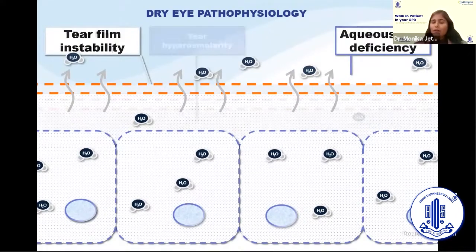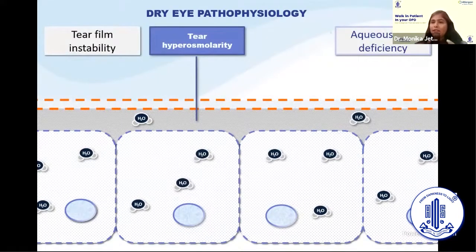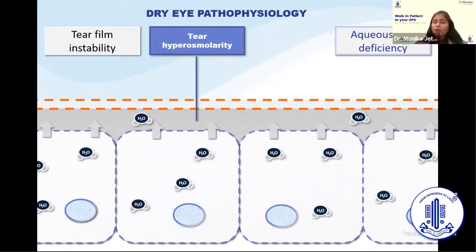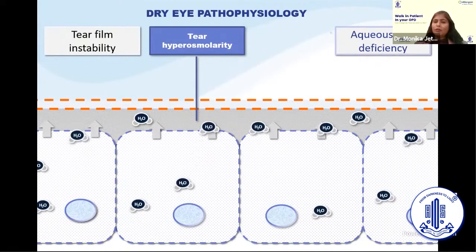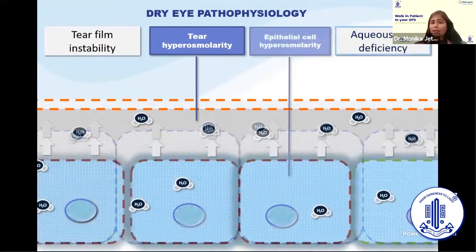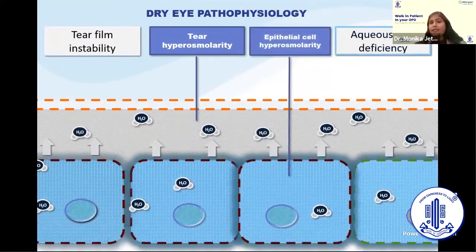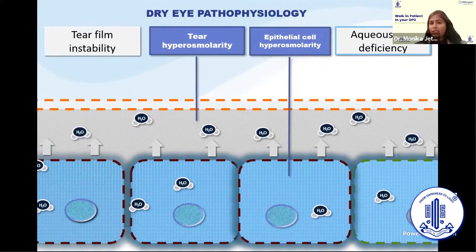To maintain osmolarity balance in dry eye, water is sucked from inside to out, causing tear hyperosmolarity to keep increasing. This reaches a stage where the epithelial cells themselves also become hyperosmolar, and they start shedding water molecules.